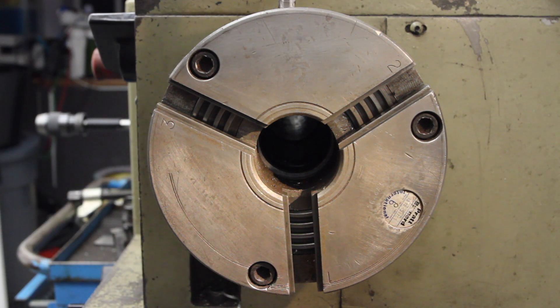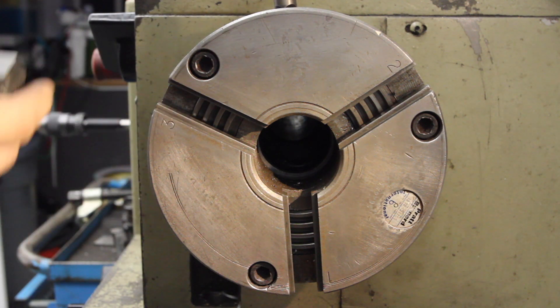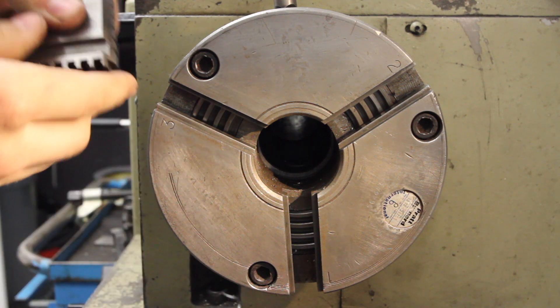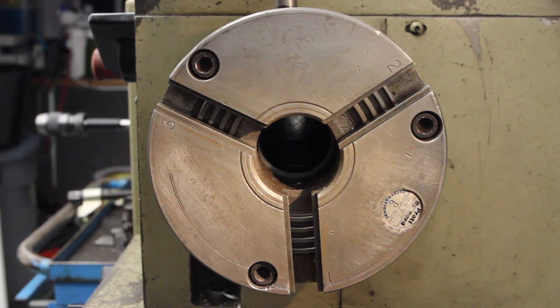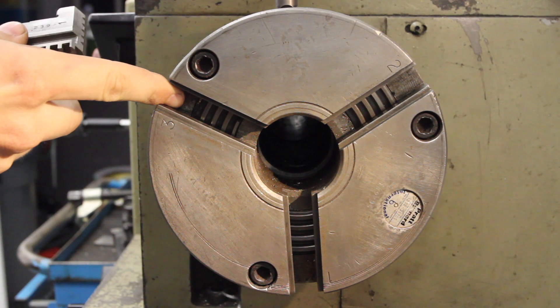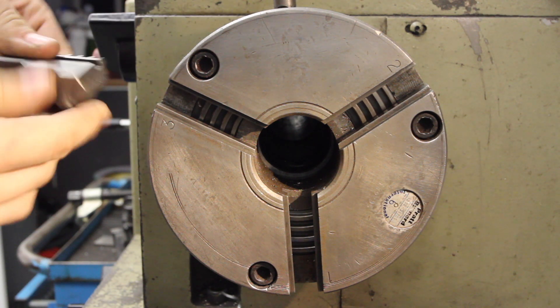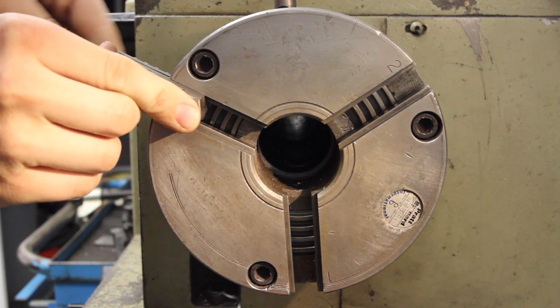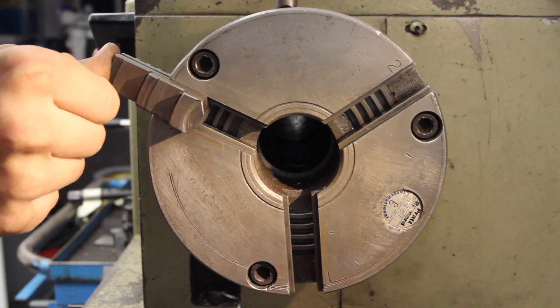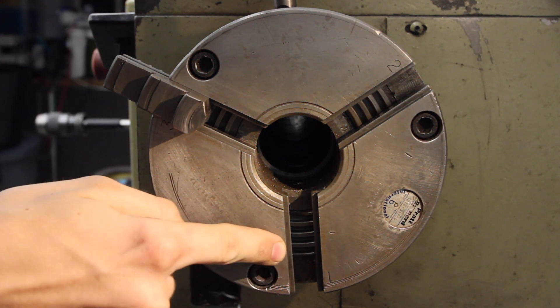So the easiest way I find is to look inside. I'm going to go one and three. Wind the scroll in, see the start of the scroll comes here, turn it back, put in jaw one, wind it around until you see it in the next slot.